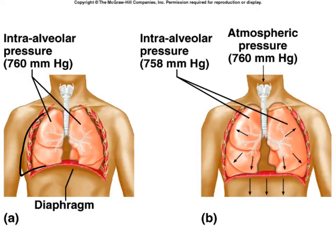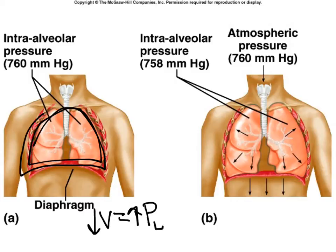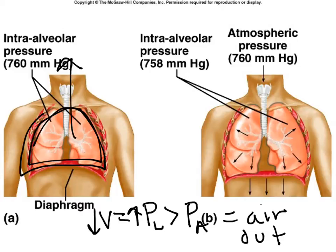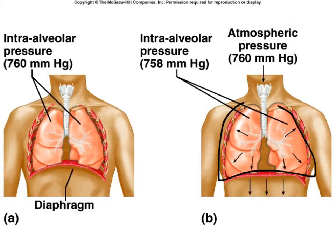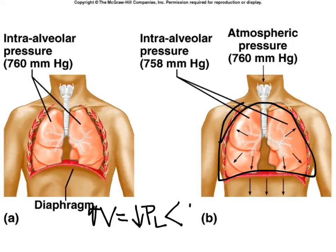When the volume inside the lungs or the chest cavity decreases, that increases the pressure inside the lungs so it becomes greater than atmospheric pressure, and the air moves out. When the volume of the lungs increases, that decreases the pressure inside the lungs to less than atmospheric pressure, and air flows in.